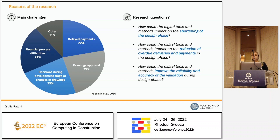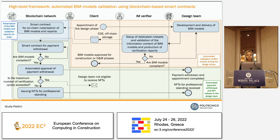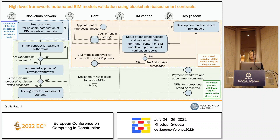In order to answer these questions, I developed a research framework that has been tested through a proof of concept using a real project. This framework contextualizes the design phase and, as you can see, involves three main actors: the client, the information model verifier, and the design team. It is divided into three main phases.